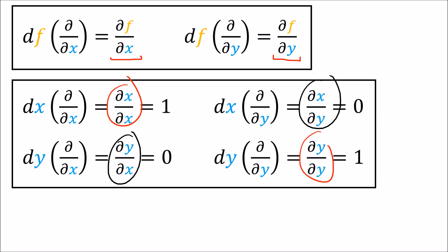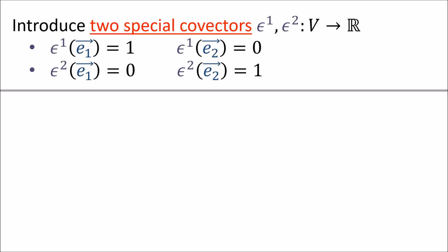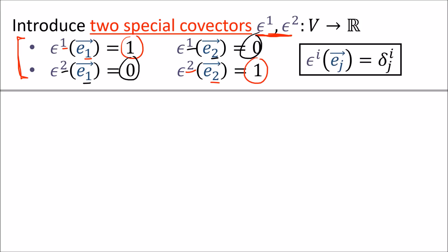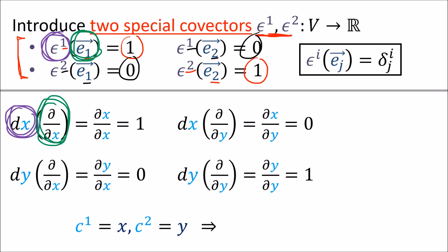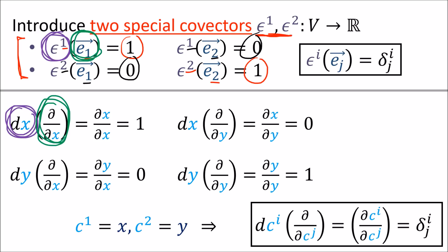Why does this matter for breaking up covector fields into components? Recall from the Tensors for Beginners series the two special covectors epsilon1 and epsilon2, defined so that if the covector index matches the basis vector index we get one, and if they differ we get zero. These four relationships are summarized as epsilon_i of e_j equals the Kronecker delta ij. The relationships we just discovered are very similar: the partial derivative operators are like basis vectors and the differential forms are like the epsilon covectors. Replacing x with c1 and y with c2, we can write dc_i of the partial derivative with respect to c_j equals the Kronecker delta ij.